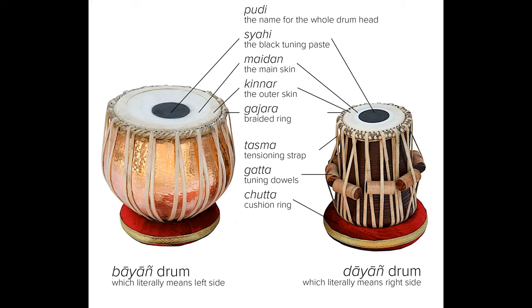Gajara: woven strap — the woven strap that holds the pudi in place on the shell. Chadi: area outside sayahi — the area between the kinner and sayahi, producing different tonal qualities when struck. Gatha: wooden blocks — wooden blocks used to tune the drum by adjusting their position along the tension straps.